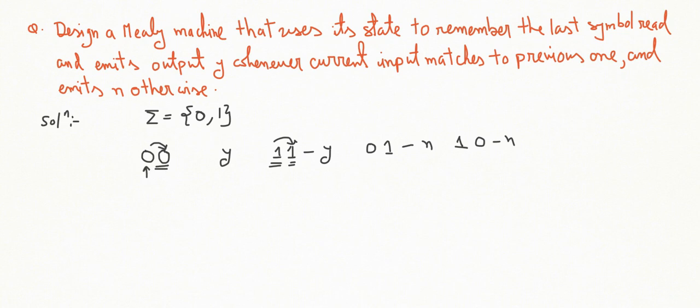Q0 is the initial state. If we read 0 first, then output will be N and we are moving to Q1. Again if we read 0, then the previous input matches with the current input, output will be Y.